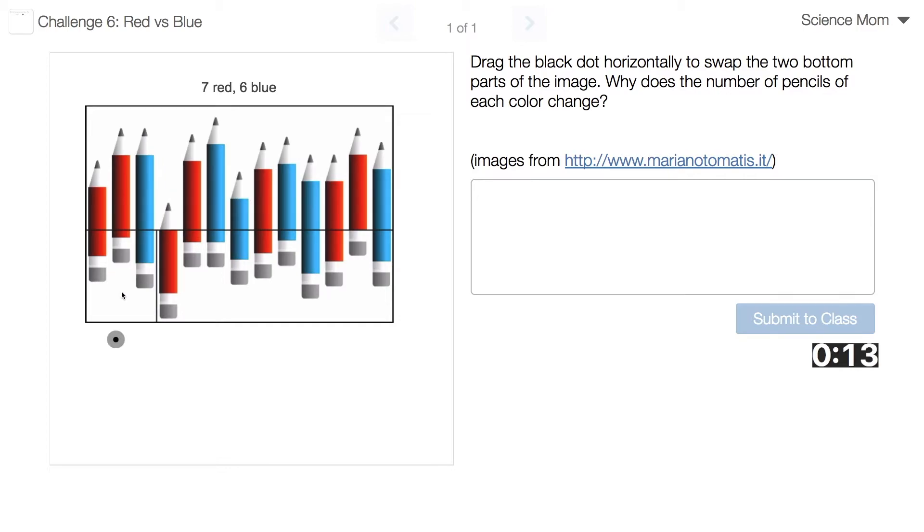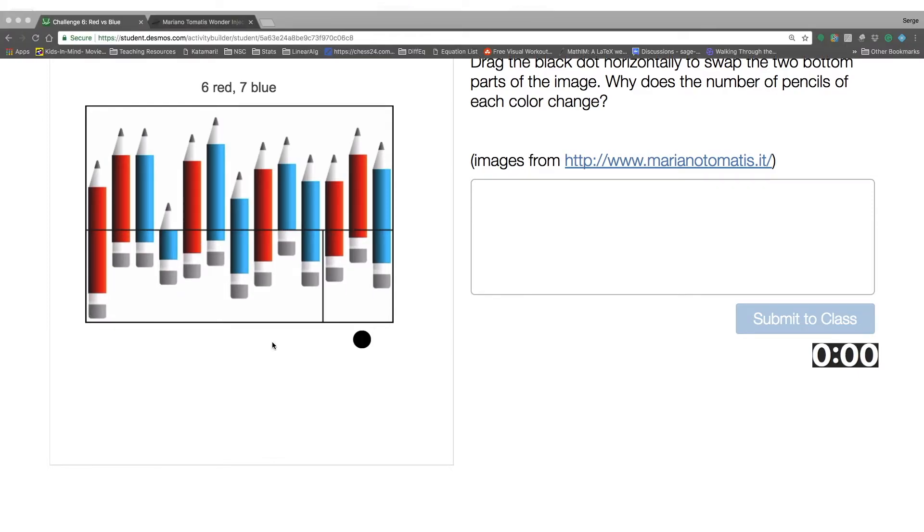But you're asking me, why does the number of pencils in each color change? There's seven red pencils currently, and now there are only six. Seven, six. Seven, six.